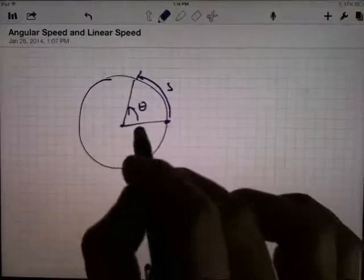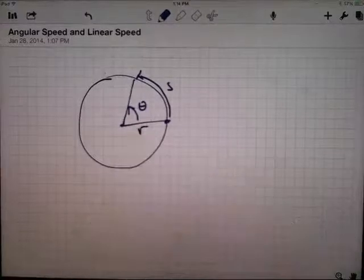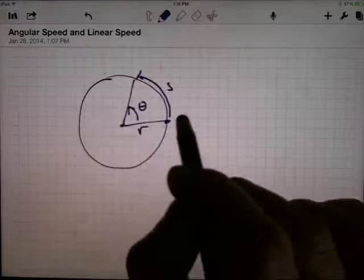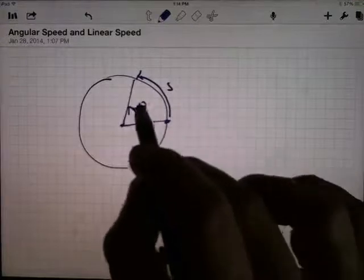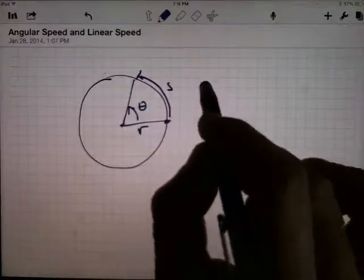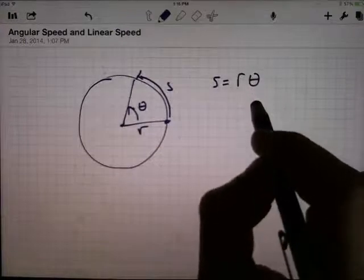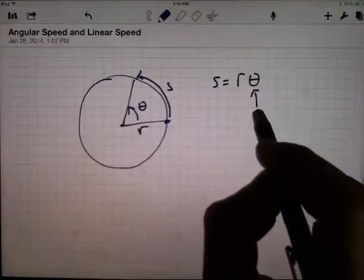If the circle is a particular circle, you might know what the radius is, and we have a relationship between the angle, the arc, and the radius, because the arc length is the radius times the angle, provided of course that that angle is measured in radians.